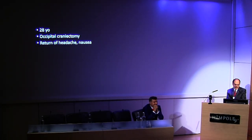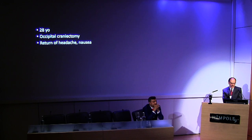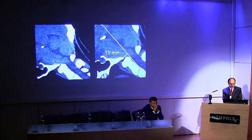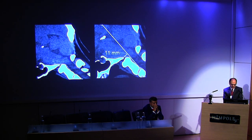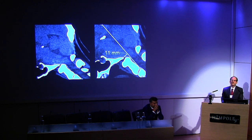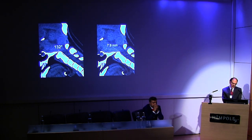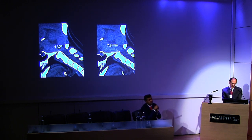This is a 28-year-old who had an occipital craniectomy, a couple of good years, and then return of headache, nausea, weakness, difficulty swallowing, and diplopia. After the occipital craniectomy, the horizontal Harris measurement was 11 millimeters. She was fused with relief of symptoms — the measurement was reduced with fusion and improvement in symptoms. Her clival axial angle was 132 degrees and the Grab-Map Stone Oaks measurement was 7.9 millimeters.